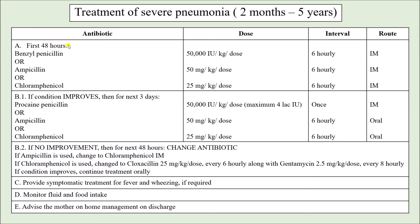For the first 48 hours, give either benzyl penicillin, ampicillin, or chloramphenicol — all given intramuscularly every six hours (four times a day). The dose of benzyl penicillin is 50,000 international units per kg per dose; ampicillin 50 mg/kg per dose; and chloramphenicol 25 mg/kg per dose. After 48 hours, review the child.